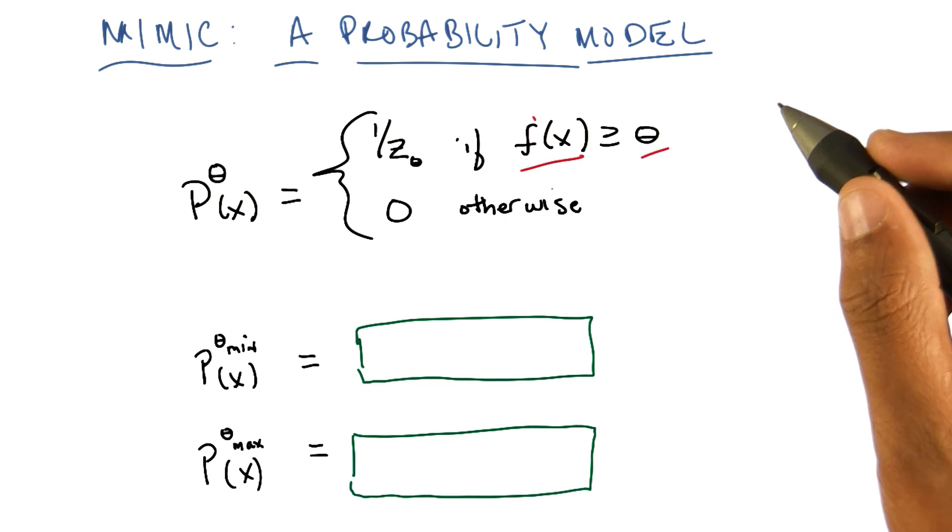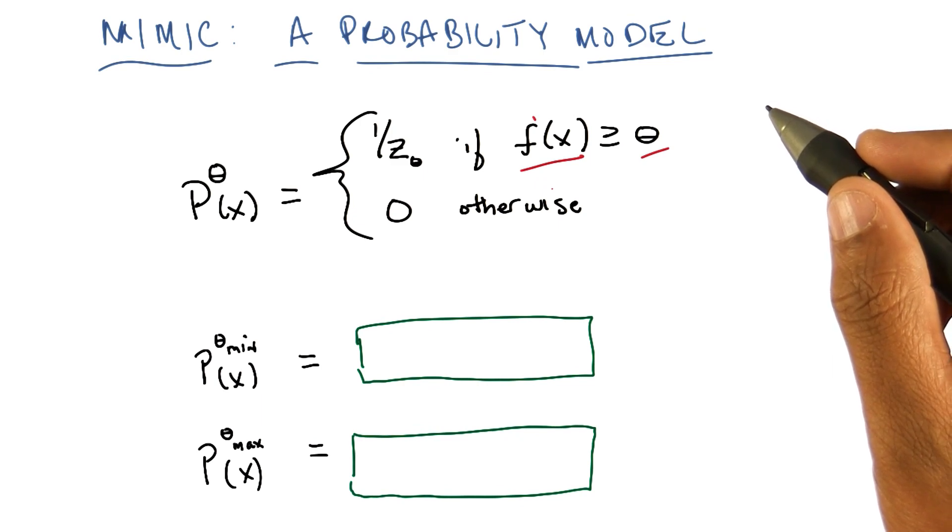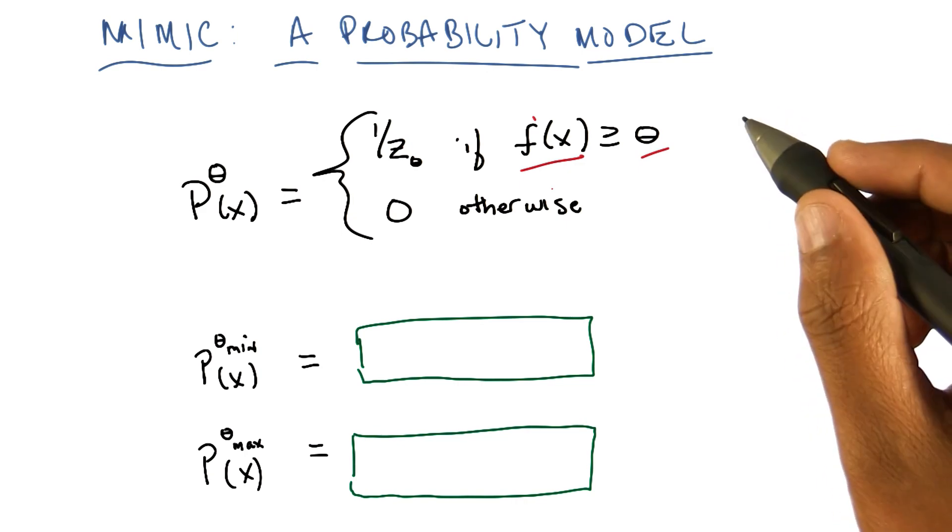I think so. So I assume that z sub theta here is some kind of normalization factor that accounts for the probability of landing or choosing an x in that space, in the space of high scoring individuals above threshold. That's exactly right.